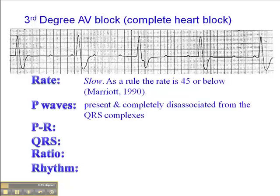P-waves are present, but they're completely disassociated from the QRS complexes, and this is really the hallmark of third-degree AV block. The P-waves map out and they're equidistant — but they're also equidistant in second-degree AV block type 2. The difference here is that periodically you'll see the P-wave alter the QRS morphology because it falls right in the middle of the QRS complex. The P-waves are equidistant and they march right through the QRS, altering the QRS morphology.